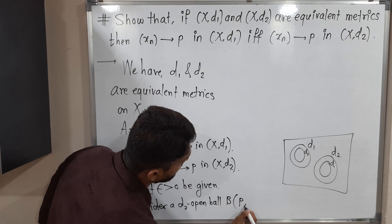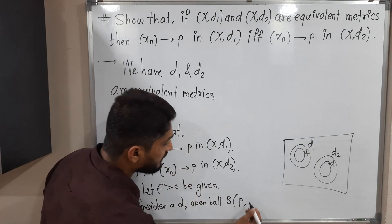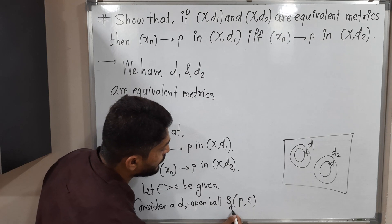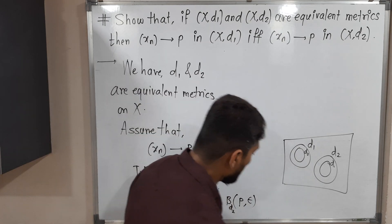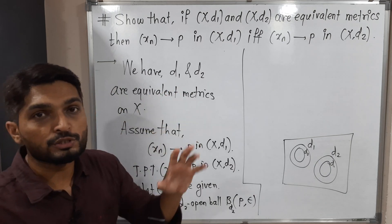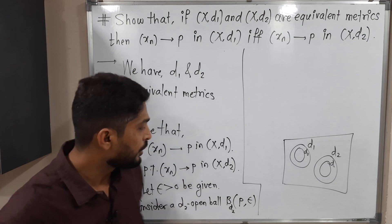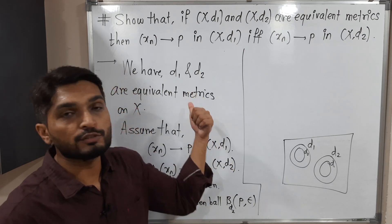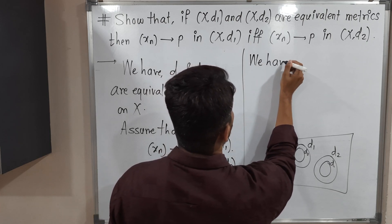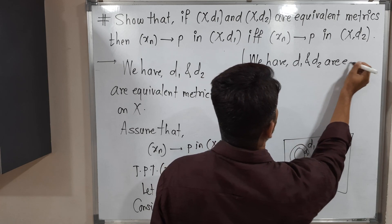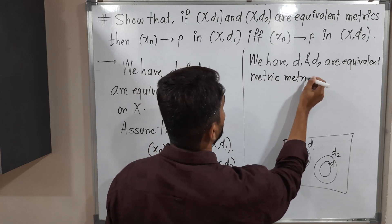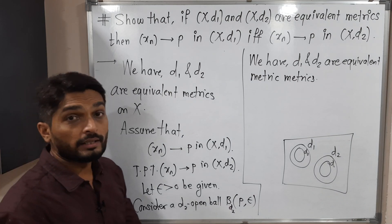My ball will be centered at P with radius epsilon — this is a D2 open ball. Now I am going to use the given information that D1 and D2 are equivalent metrics. Right now we have a D2 open ball, and by using this equivalence information we can say it contains some D1 open ball. We have D1 and D2 are equivalent metrics.